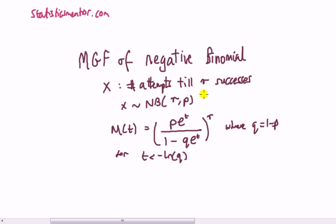The second thing I want to point out is that this MGF here is something where it's to the power of r, and r is the number of successes. But this thing in here, in the bracket, this is actually the MGF of a geometric distribution.